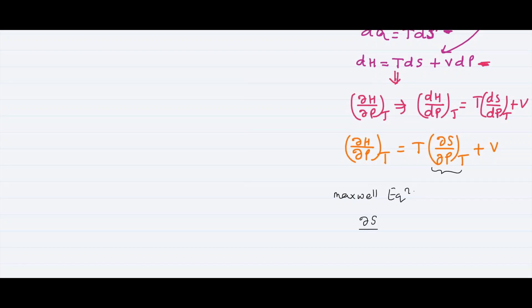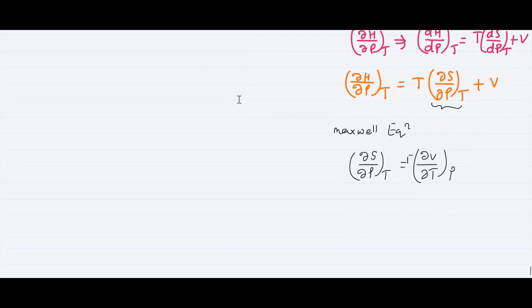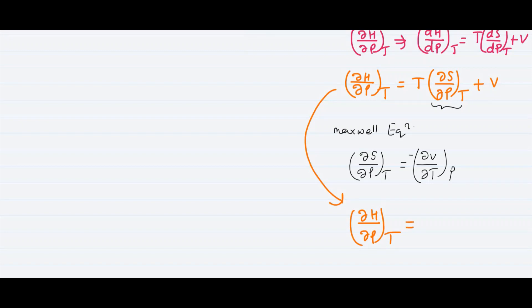Now we substitute using a Maxwell equation. From the Maxwell relation, (∂S/∂P) at constant temperature equals minus (∂V/∂T) at constant pressure. So (∂H/∂P) at constant temperature becomes V minus T times (∂V/∂T) at constant pressure.